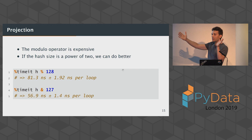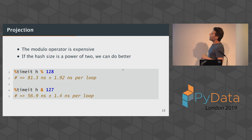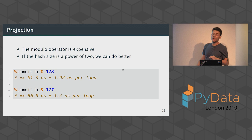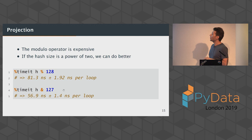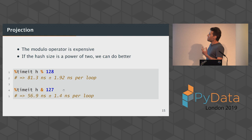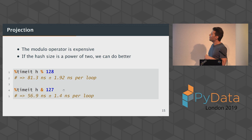We also had that modulo operator, which reduces the size down from a 32-bit integer — very large numbers potentially — down to what we want. If the hash size is a power of two, you can do much better: using modulo with 128 takes roughly 81.3 nanoseconds, but using AND with size minus one — a trick for modulo of a power of two — gets you down to 57 nanoseconds. That saves you about 30% of computation time. When you're doing this millions of times, it all adds up.